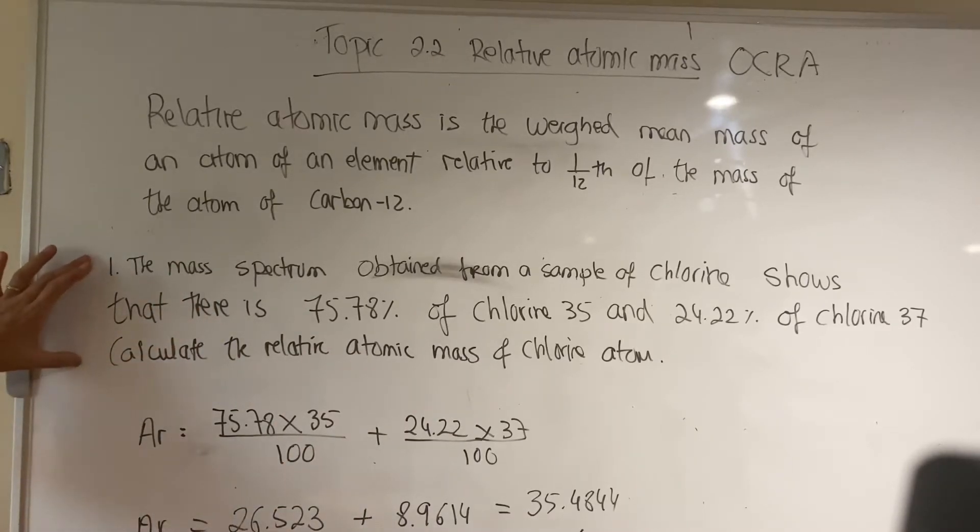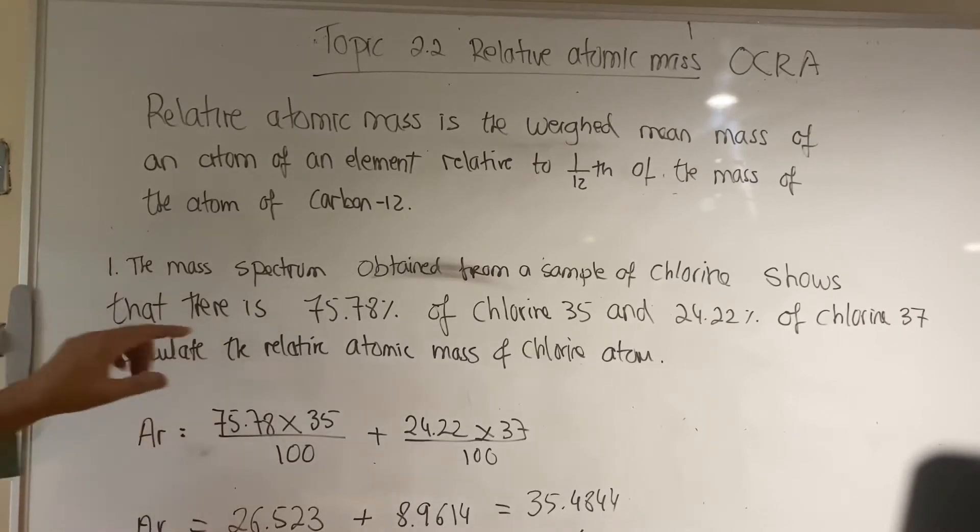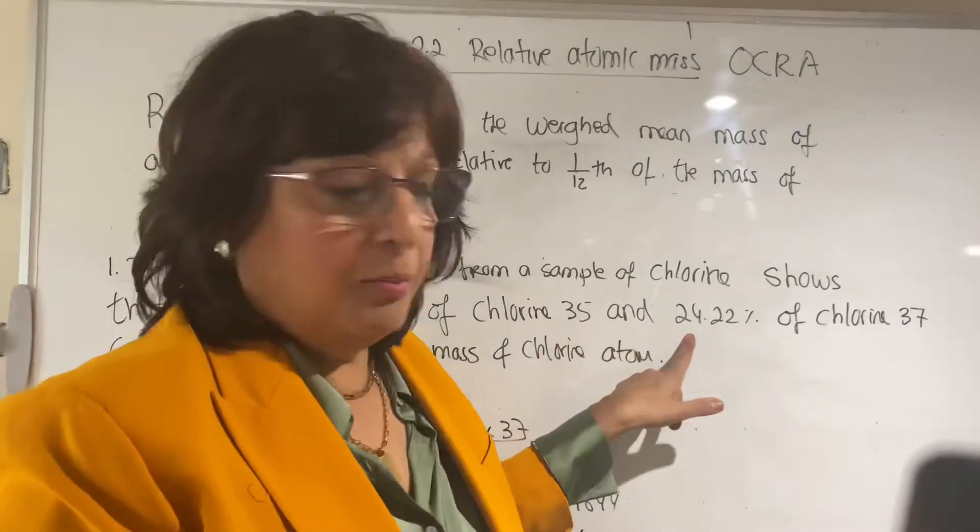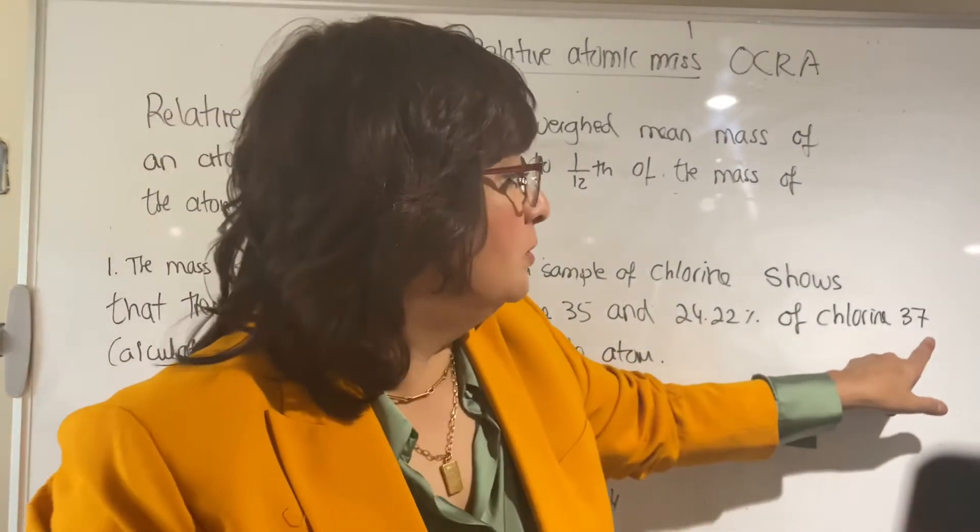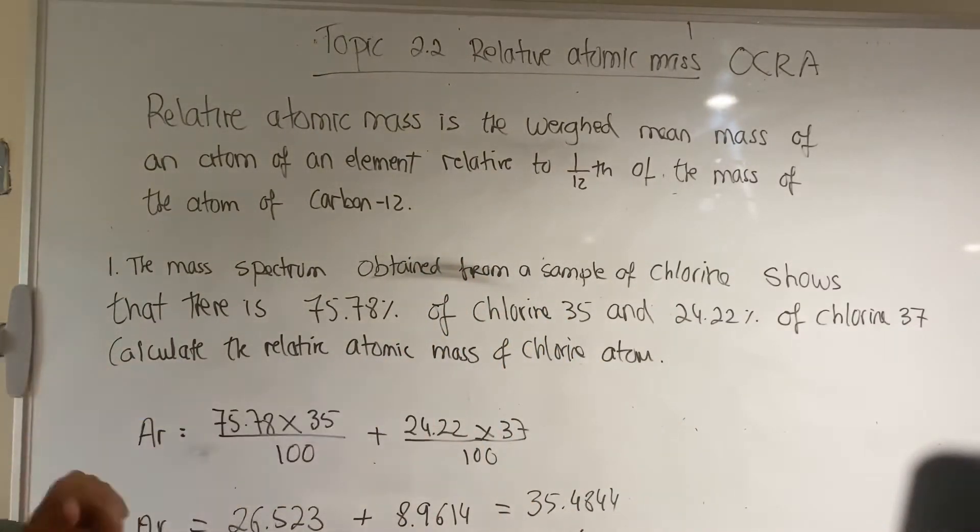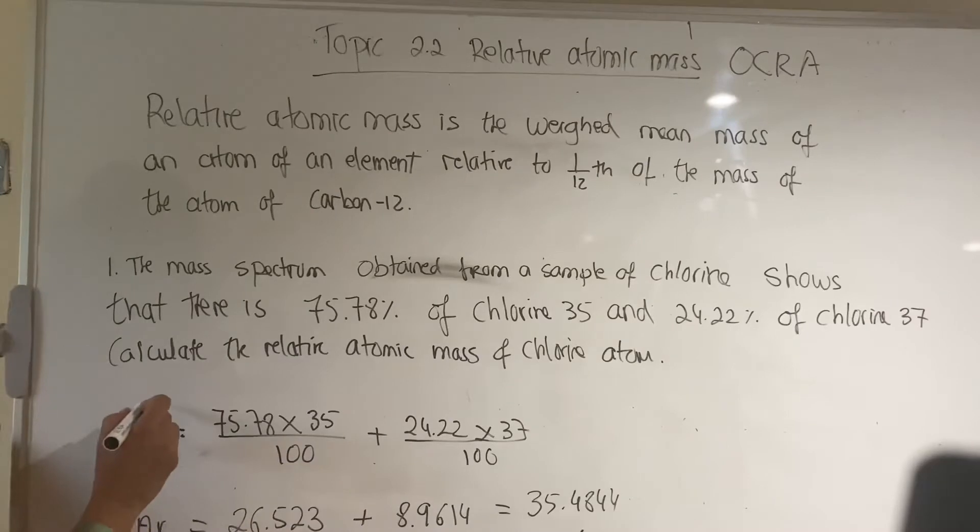The mass spectrum obtained from a sample of chlorine shows that there is 75.78% of chlorine-35 and 24.22% of chlorine-37. So calculate the relative atomic mass of the chlorine atom.